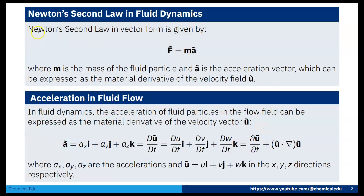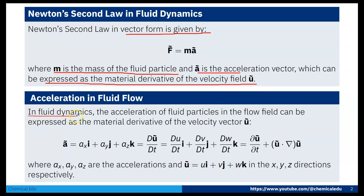Newton's second law in vector form is given by force equals mass into acceleration, where m is the mass of the fluid particle and a is the acceleration vector. In fluid dynamics, the acceleration of the fluid particle in the flow field can be expressed as the material derivative of the velocity vector u. Acceleration a is a vector quantity with three components: ax, ay, and az.